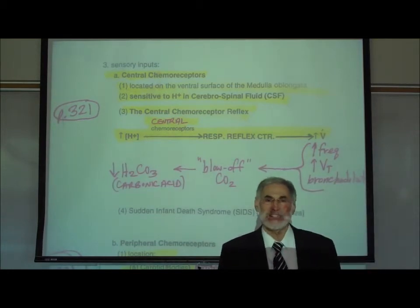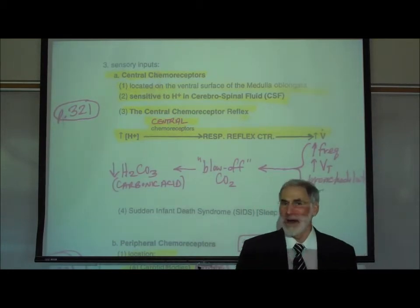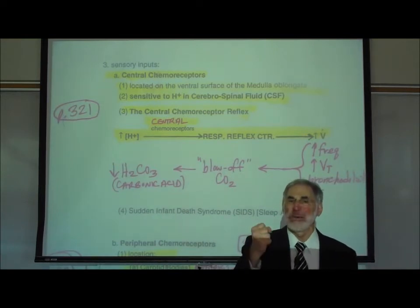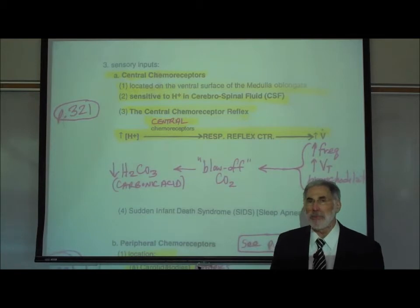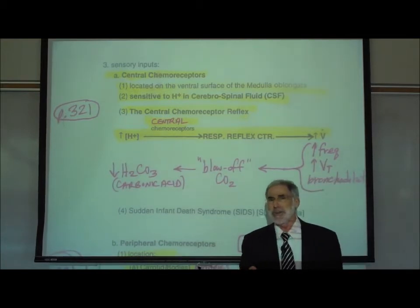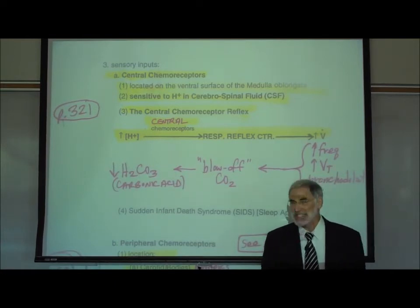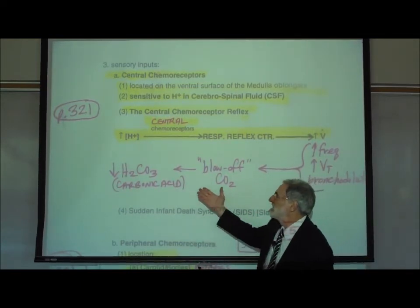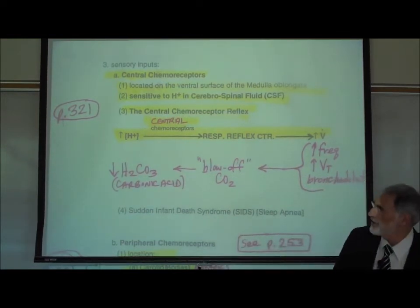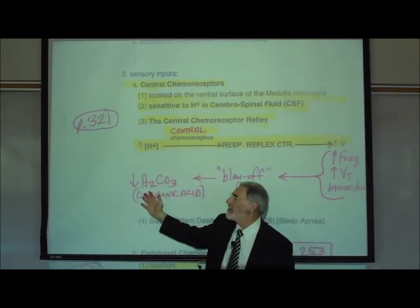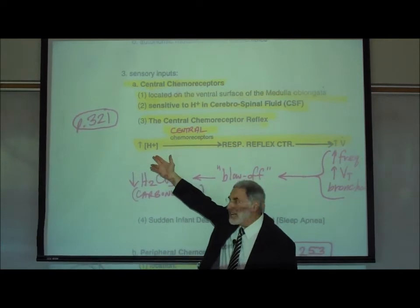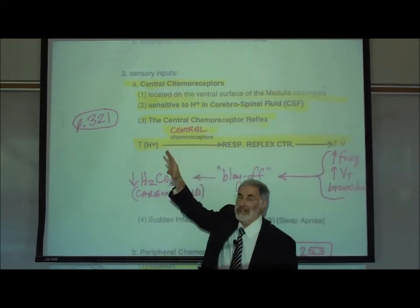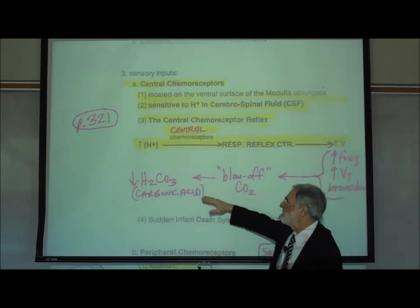Most of the carbon dioxide in the body is in the form of carbonic acid, which is in equilibrium with free hydrogen ion and bicarbonate. Carbon dioxide should be viewed as the major source of acidity, because for every CO₂ in the body, that's equivalent to an extra carbonic acid. Blowing off carbon dioxide reduces the amount of carbonic acid, reducing the total acid in the body and correcting the excess acidity. That is how the central chemoreceptor reflex compensates for increased acidity.